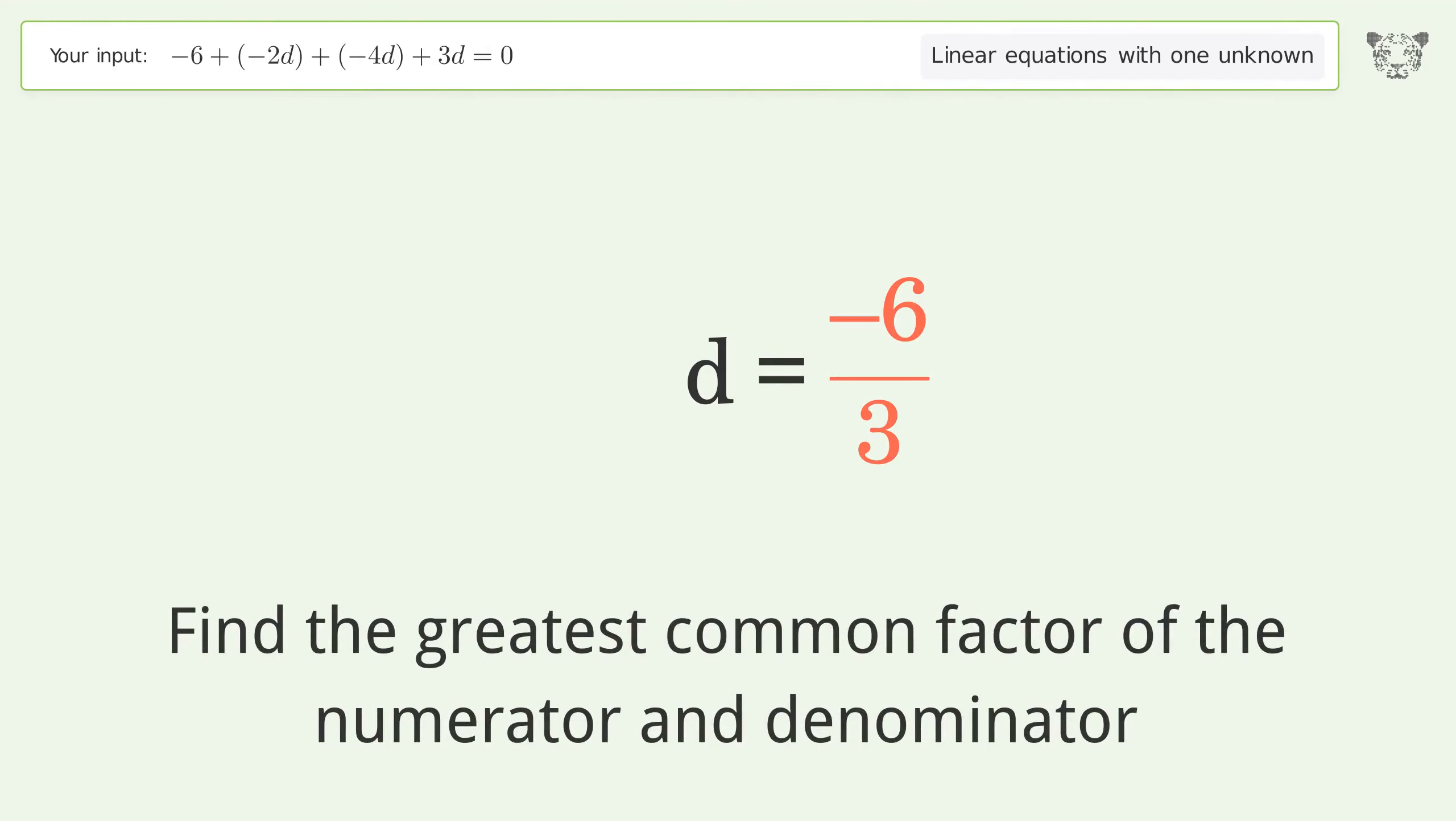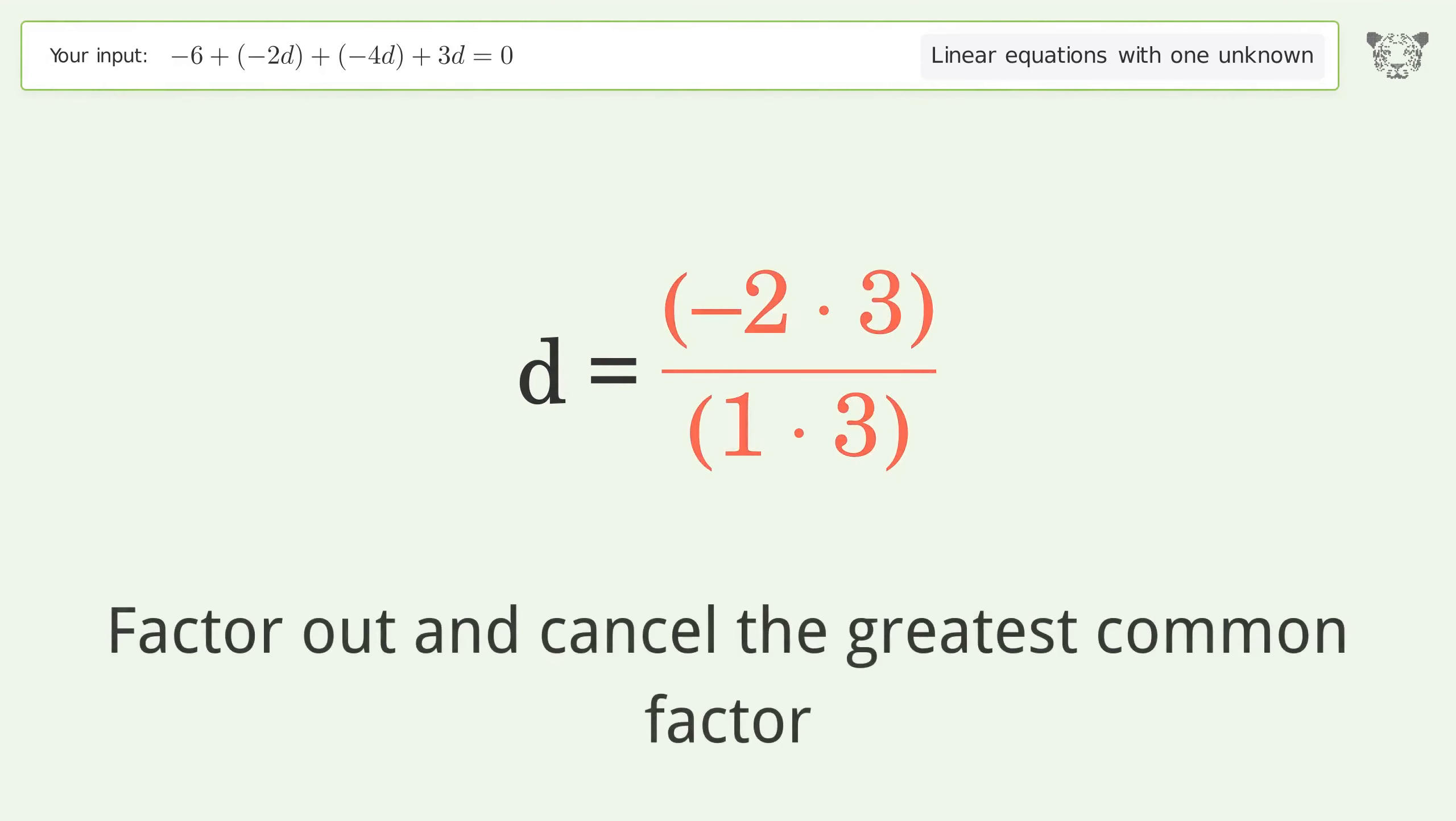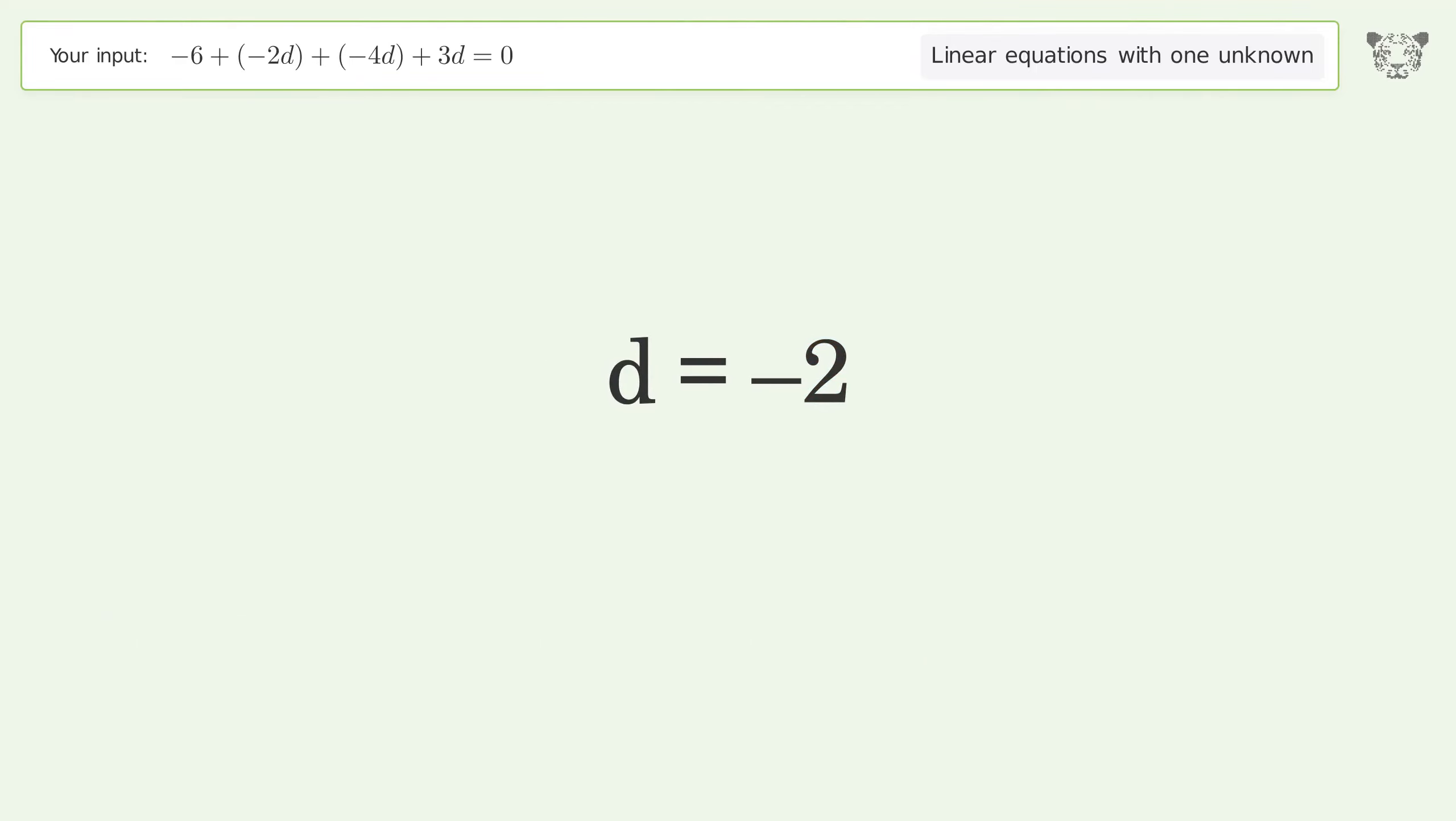Find the greatest common factor of the numerator and denominator. Factor out and cancel the greatest common factor. And so the final result is d equals negative 2.